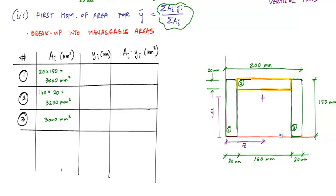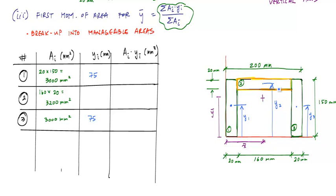Now the distance from the horizontal datum to the centroid of each area. For area one, the centroid is at Y1 = half of 150 = 75 millimeters. Y3 is also 75 millimeters. The centroid of area two from the reference is 150 minus 20 divided by 2, added to 130 — which gives Y2 = 140 millimeters.